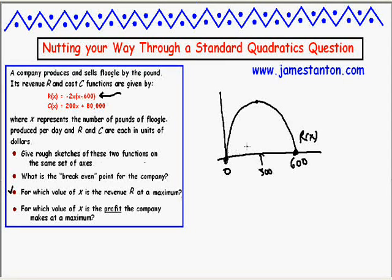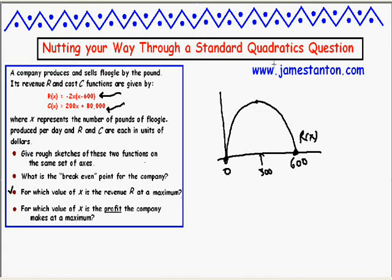We might want to argue — just because the question's silly — why would the revenue go down once you get beyond making 300 pounds of flugel? Maybe demand goes down or something. The cost function we'd recognize as a straight-line graph of slope 200, starting at the 80,000 point. Now, 80,000 is somewhere on the vertical axis, but I've given no sense of scale. It might be way above the quadratic. I suspect the line is going to have to intersect the quadratic, because these questions are designed to be interesting. If it doesn't, the math later on will probably tell us.